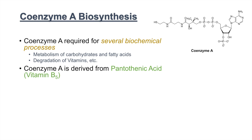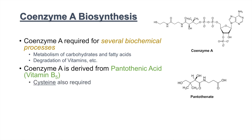Coenzyme A is derived from pantothenic acid, or vitamin B5. What is also required is the amino acid cysteine. We'll talk about how pantothenic acid and cysteine are repurposed and processed into coenzyme A in the next slide.